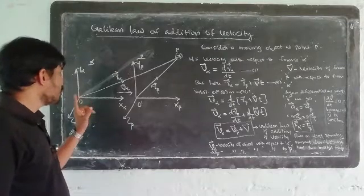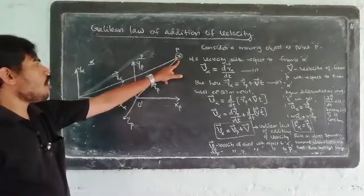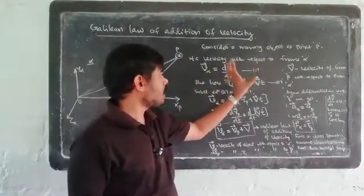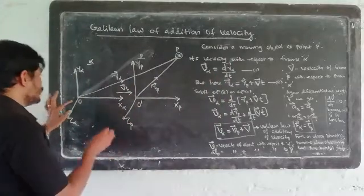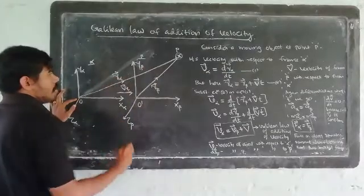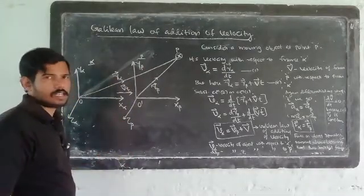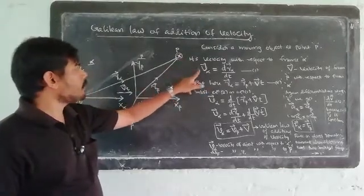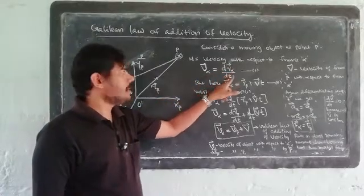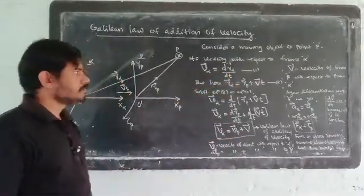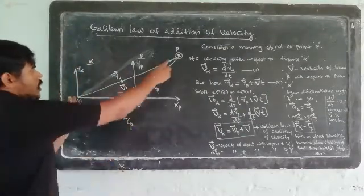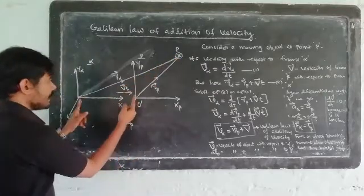If there is a moving object at point P, then its velocity with respect to frame alpha and with respect to frame beta gives the Galilean law of addition of velocity. The velocity of the object with respect to frame alpha is vector V-alpha equal to d(r-alpha)/dt, which is equation number 1. By Galilean transformation, vector r-alpha equals vector r-beta plus V times t.